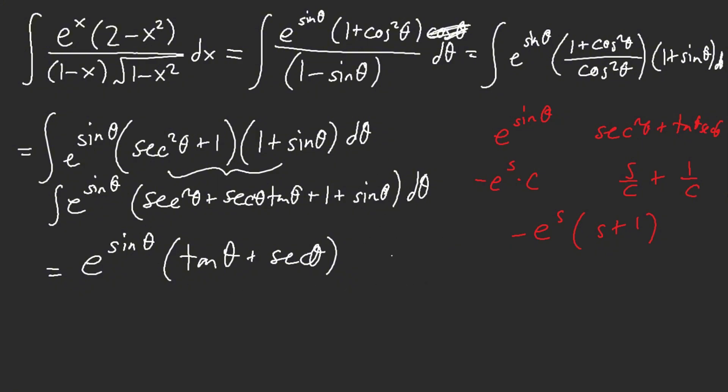And then I had to, of course, change it back where x was equal to sine theta. I have to turn it back into inverse sine. So now I have e to the x. This is sine theta over cosine theta, plus this is one over cosine. So this was the answer.